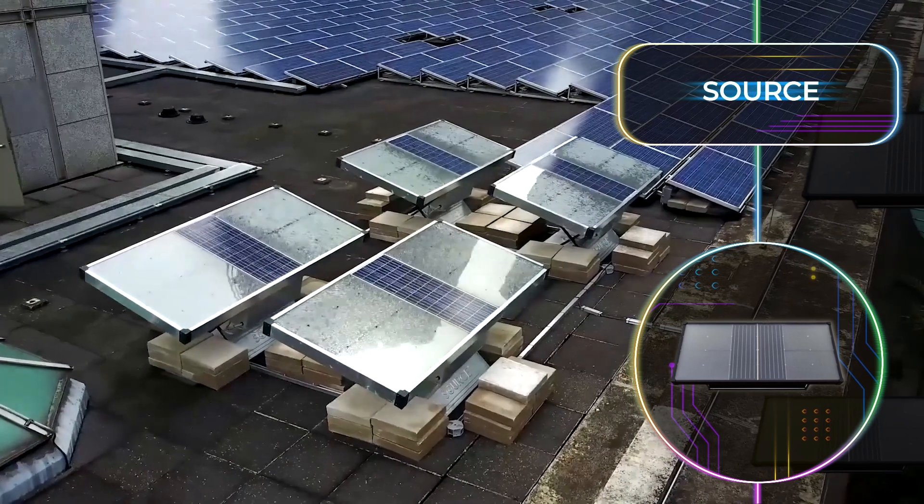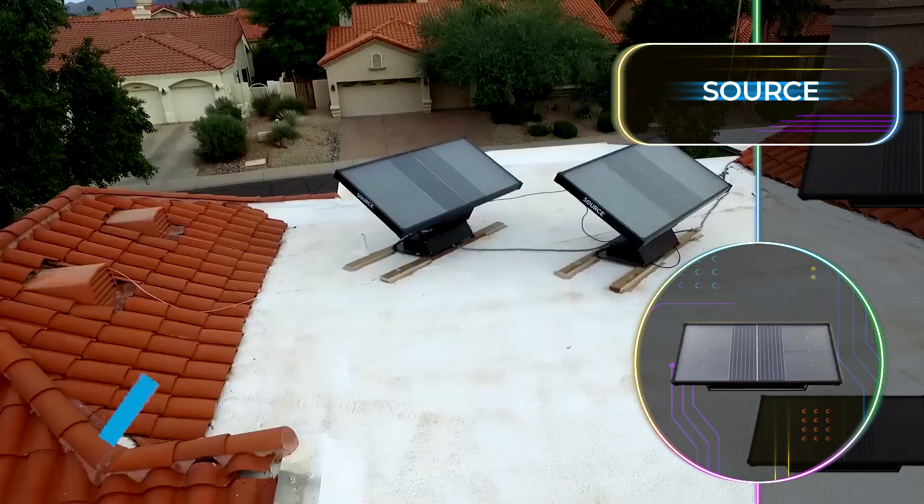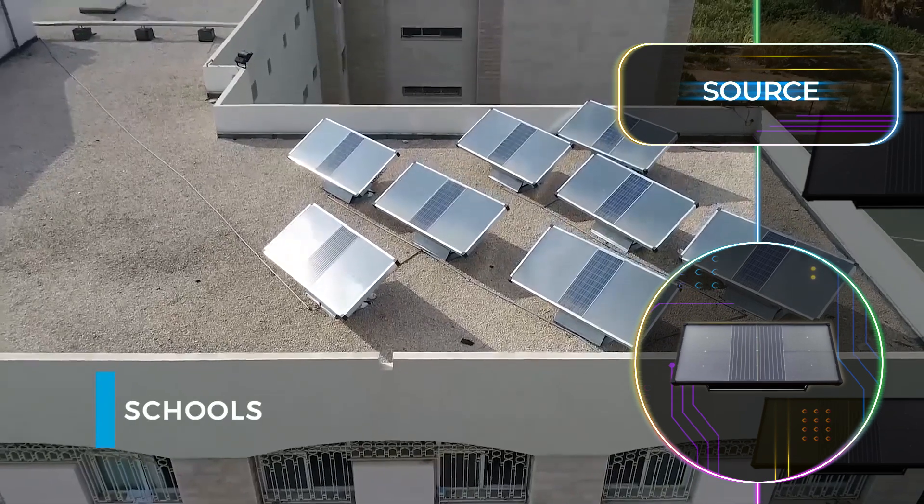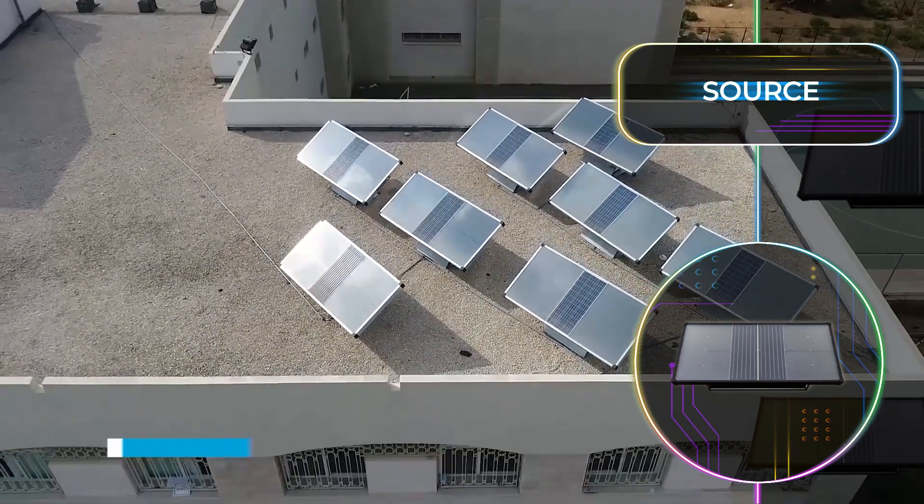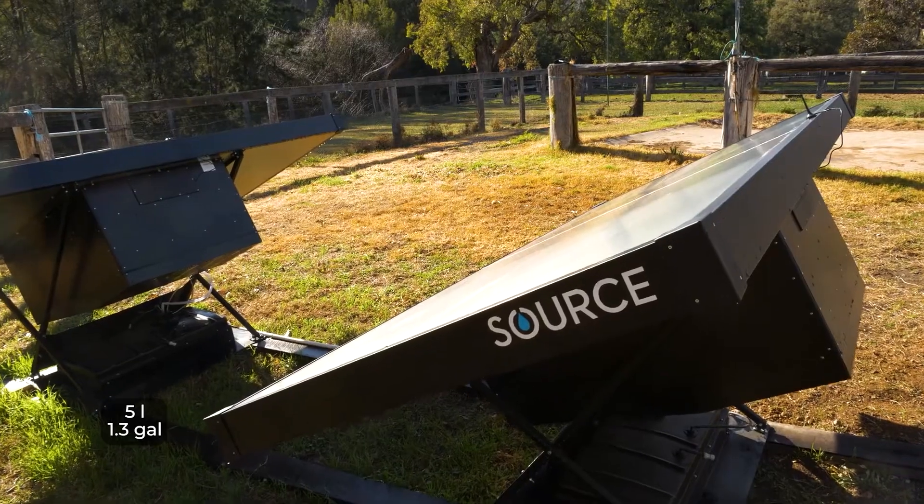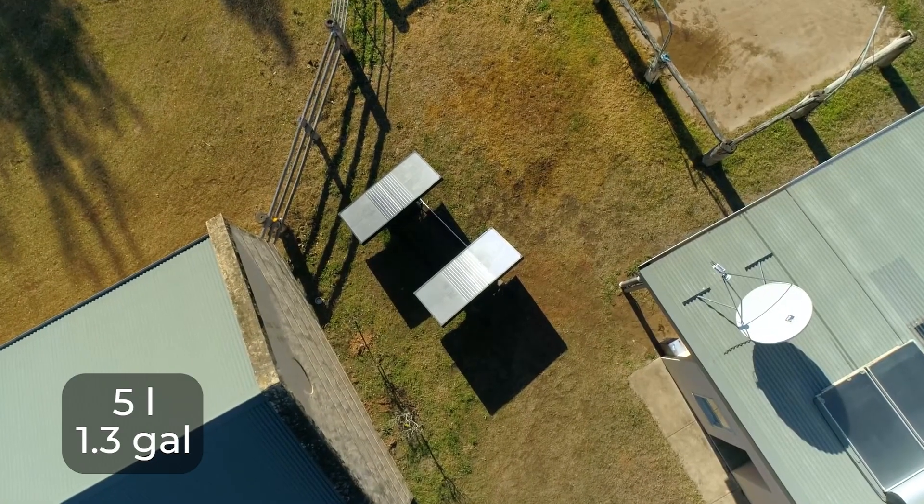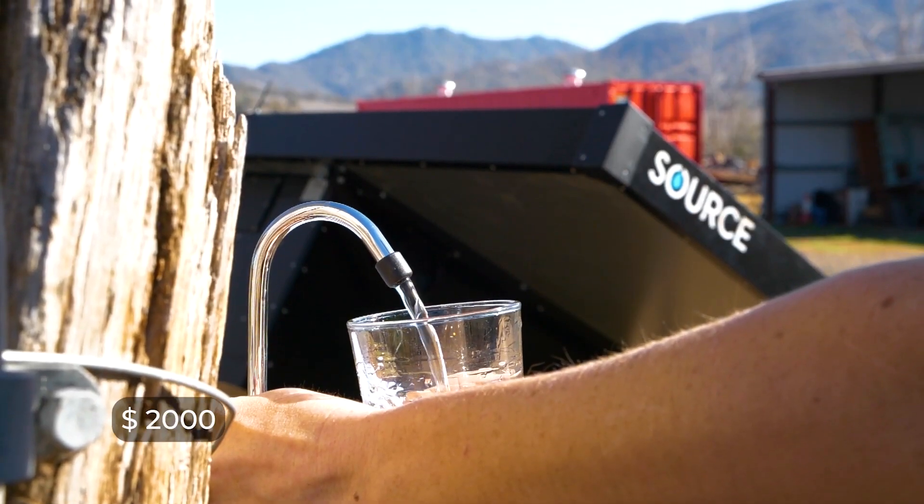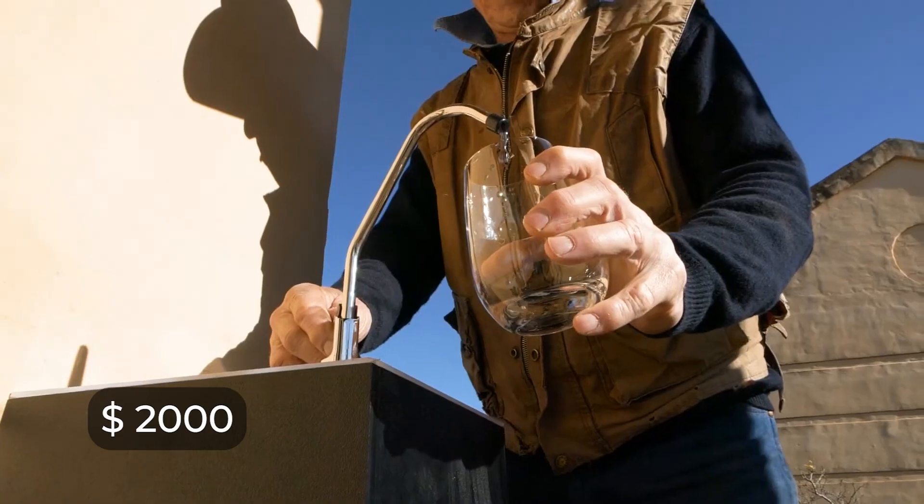But let's face it, regular electricity supply can also be a hurdle for many. Source tackled this by incorporating solar panels to power the device. It has the potential to hydrate entire communities, and one panel can generate 5 liters or 1.3 gallons of water every day. Considering its benefits, the $2,000 price tag is a small price to pay.